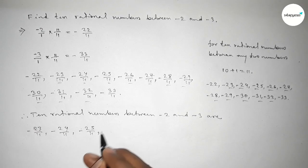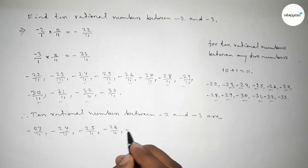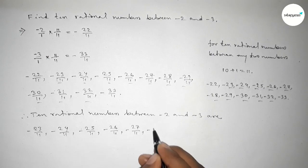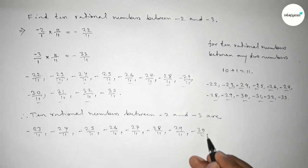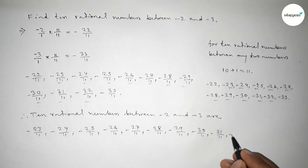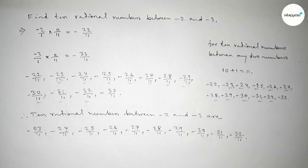So this is the process to find out 10 rational numbers between minus 2 and minus 3. That's all, thanks for watching. If this video is helpful to you, then please share it with your friends.